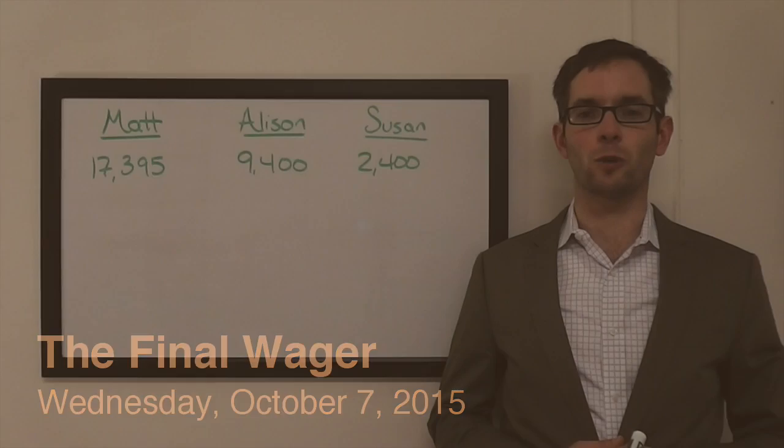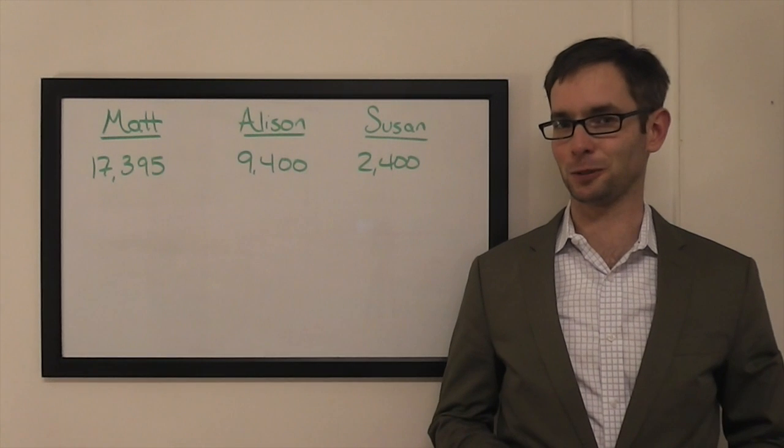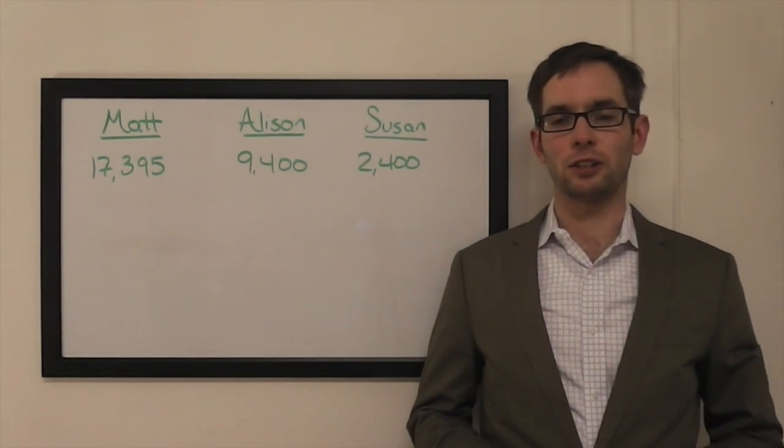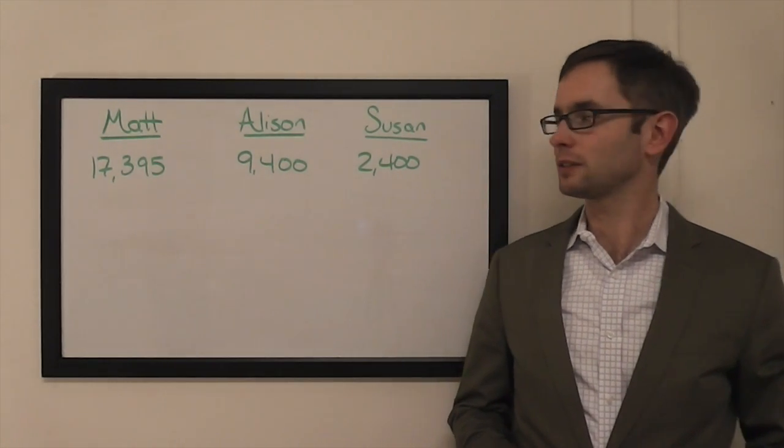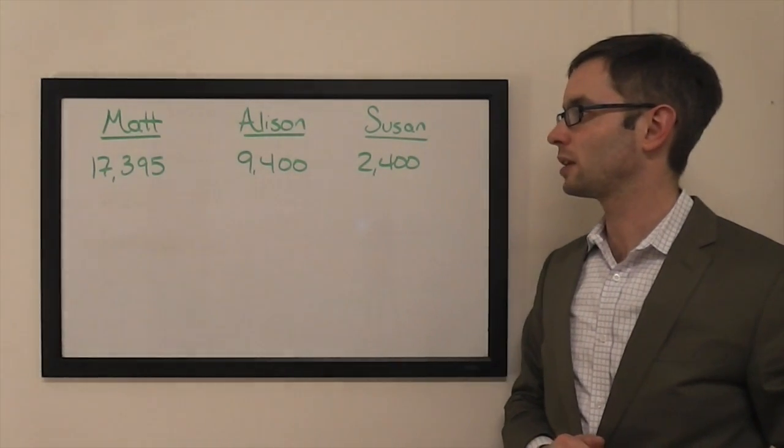The wager question, of course, belongs to Allison, who had a huge deficit toward the end of Double Jeopardy. And instead of wagering everything, as I thought she should have, she wagered just $2,000, putting her in this position: $9,400, just barely more than half of Matt's total, $17,395.